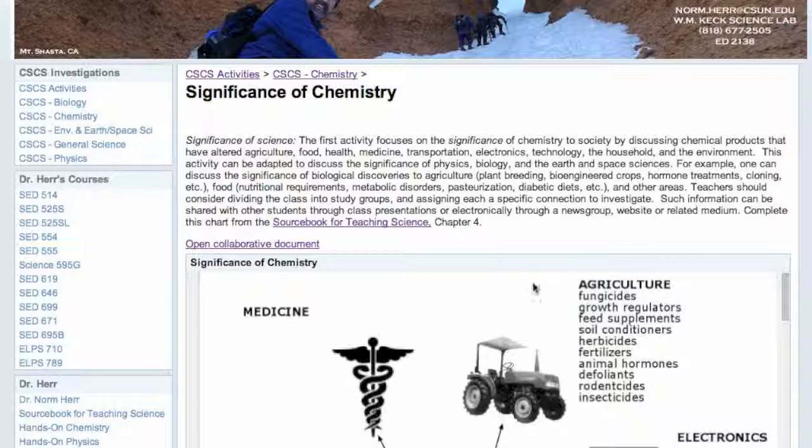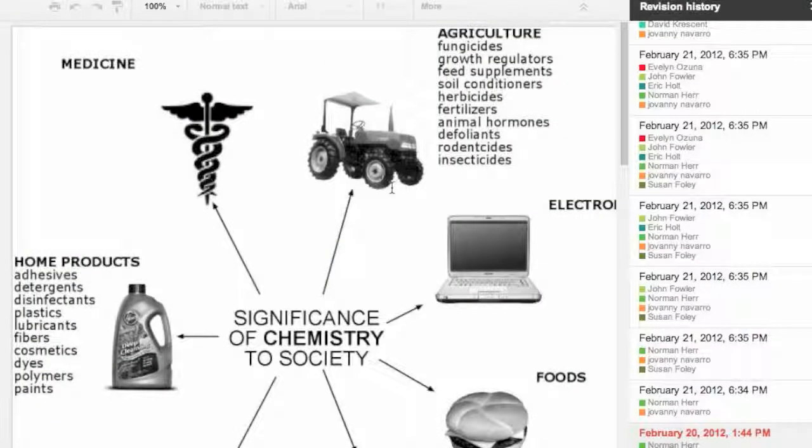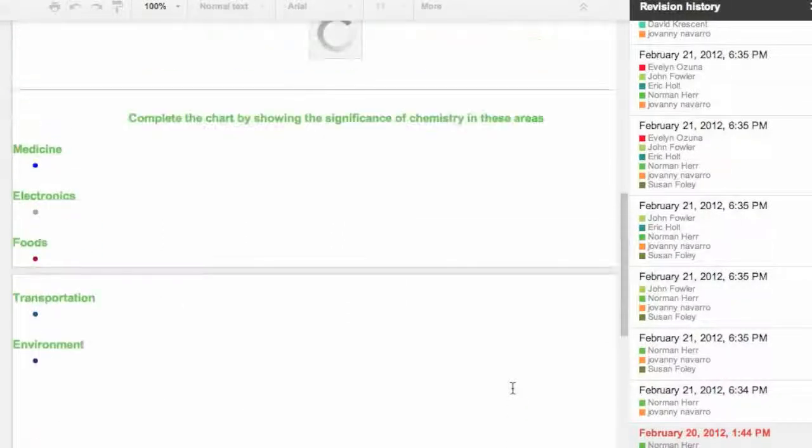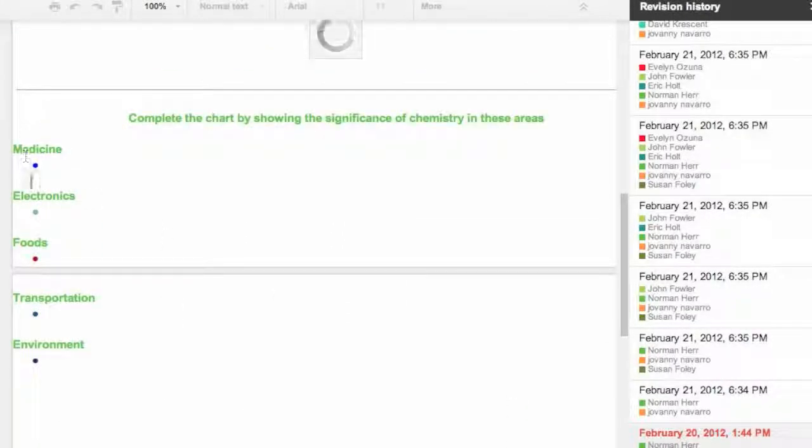In this particular activity, students were asked to look at a blank collaborative document and try to answer questions in terms of how has chemistry affected the development of agriculture, electronics, foods, or home products. As you can see, if we go back to the original version, we set up just some basic categories and blank dots so students could enter into this.